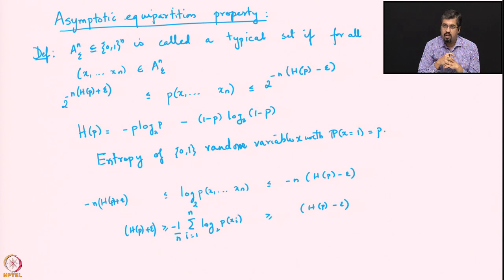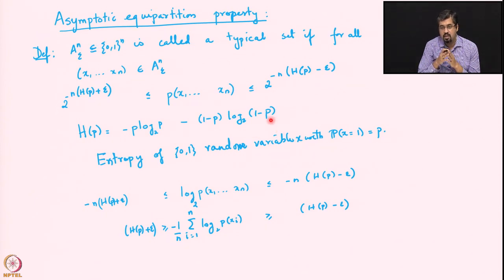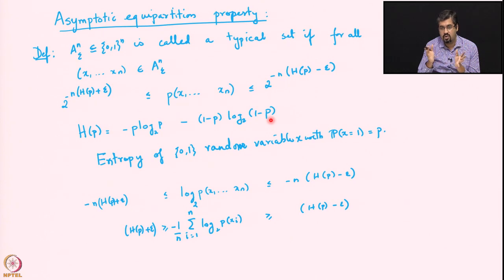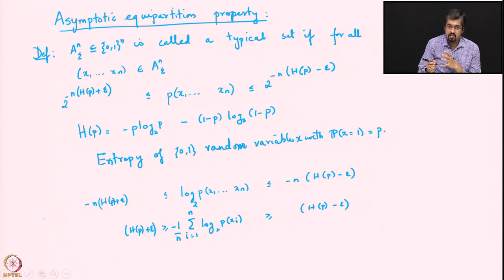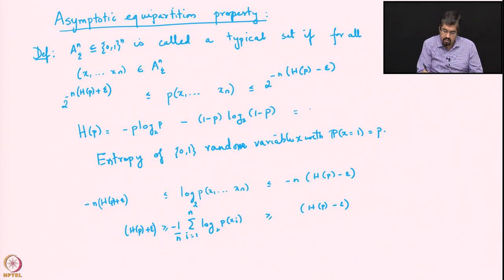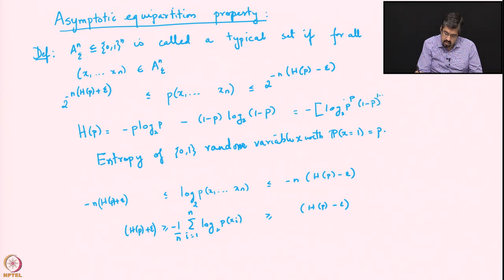H(p) is the entropy — a fundamental quantity in information theory, statistics, and statistical mechanics. We can also write it as: H(p) = -log_2(p^p × (1-p)^{1-p}), taking the negative sign outside. Unfortunately, a full discussion of entropy's meaning and interpretation would take a lecture of its own.